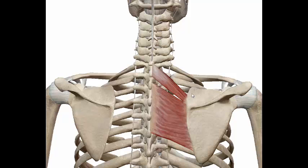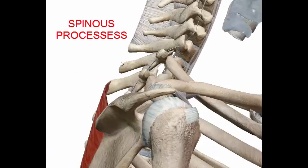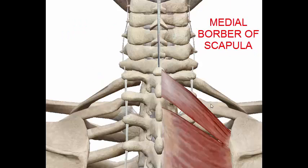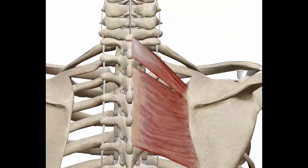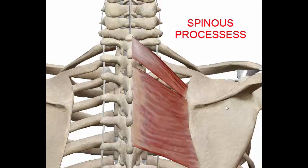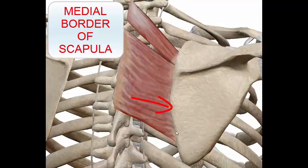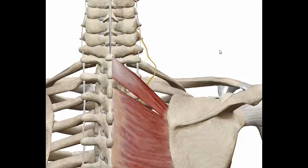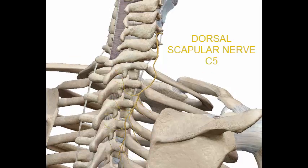There are two rhomboid muscles: rhomboid minor and rhomboid major. The rhomboid minor starts from the spinous processes of C7 to T1 and inserts into the medial or vertebral border of the scapula above the scapular spine. The rhomboid major starts from the spinous processes of T2 to T5 and inserts into the medial or vertebral border of the scapula below the scapular spine. Nerve innervation for both rhomboid minor and rhomboid major is the dorsal scapular nerve, C5.